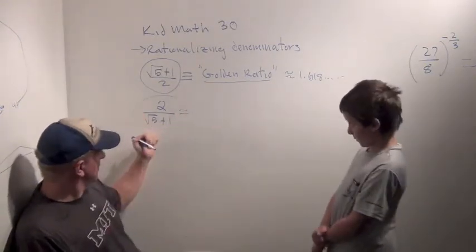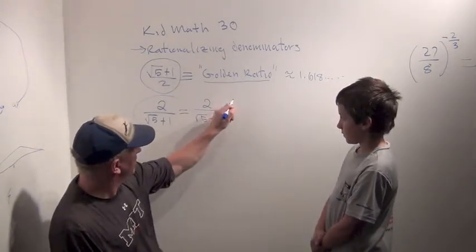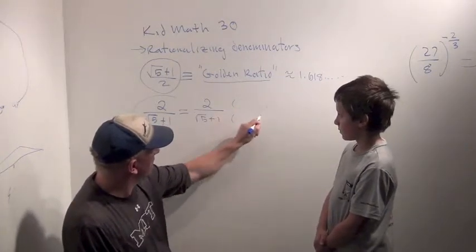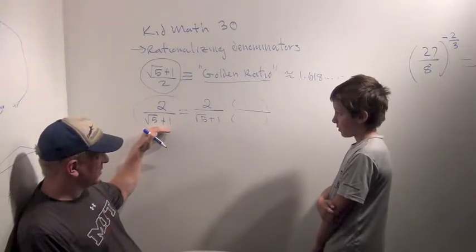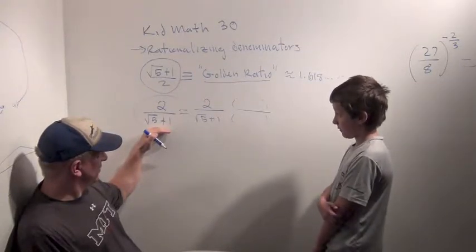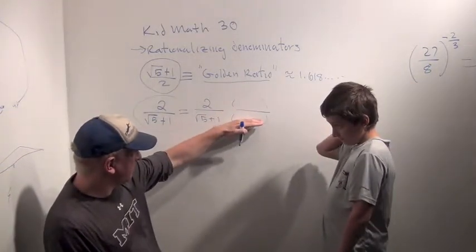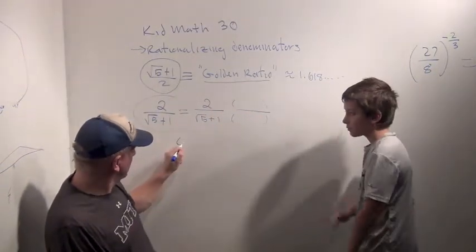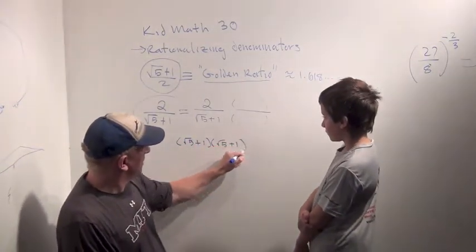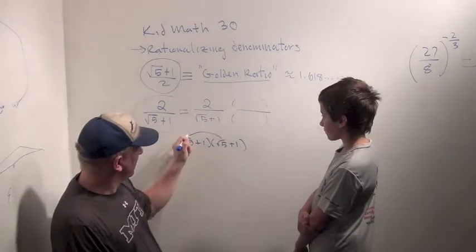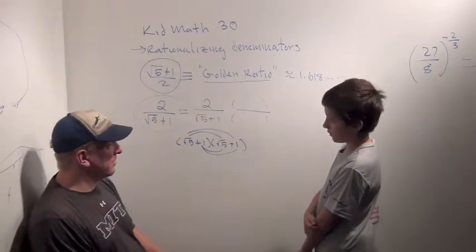Now, square root of 5 plus 1. Right, so we do 2 over the square root of 5 plus 1, and we have to multiply by a convenient form of 1 over 1 to get rid of the square roots on the bottom. Square root of 5 plus 1? No. Square root of 5 plus 1, square root of 5 plus 1. If we multiply by square root of 5 plus 1 over square root of 5 plus 1, we will get square root of 5 times square root of 5, square root of 5 times 1, 1 times square root of 5, and 1 times 1. Is that going to get rid of the square root of 5? No.